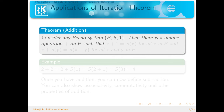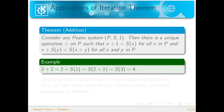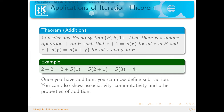What are the applications of the iteration theorem? The first application is that we can define addition on a Peano system. For any general Peano system (P, S, 1), there is a unique operation '+' on P such that x + 1 = S(x) for all x in P, and x + S(y) = S(x + y) for all x, y in P. For example: 2 + 2 = 2 + S(1) = S(2 + 1) = S(3) = 4. Once we have this addition operation, we can define subtraction and show associativity, commutativity, and other properties of addition.